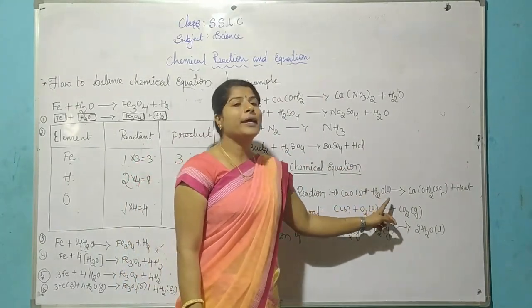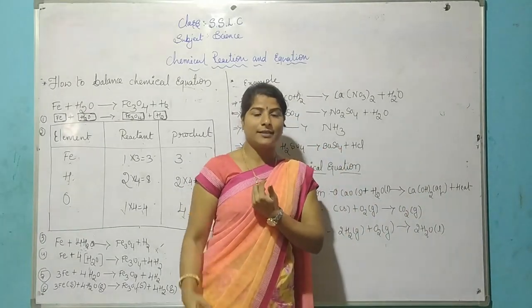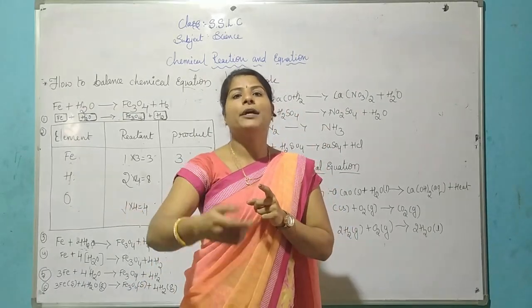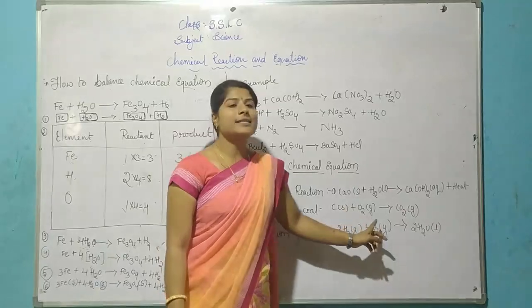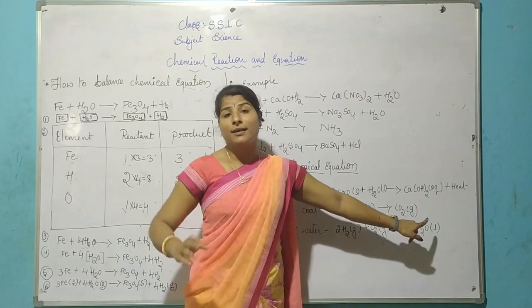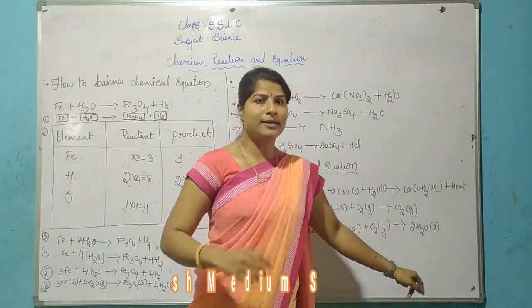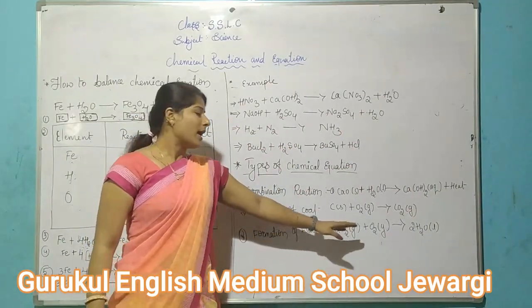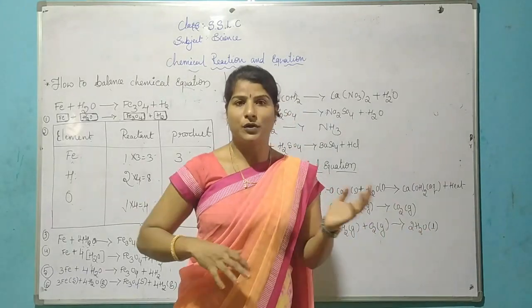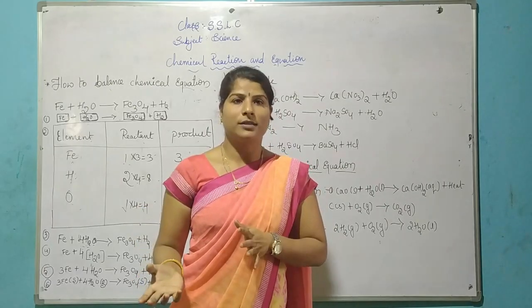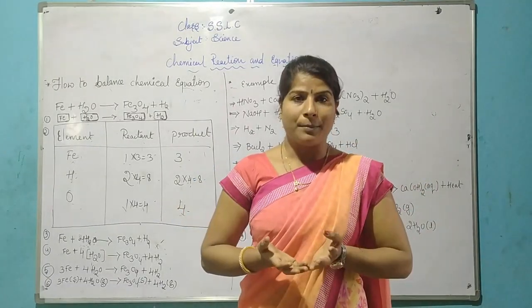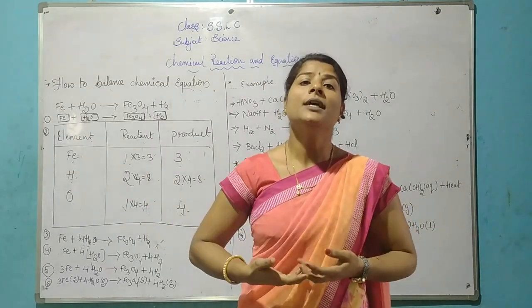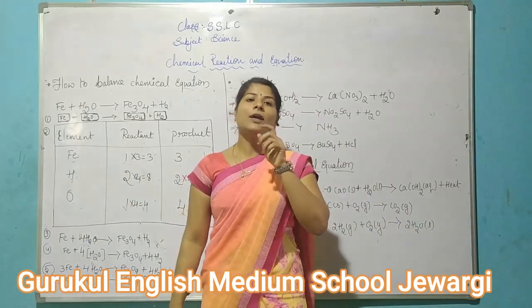Example: calcium oxide combined with water forms a single product — calcium hydroxide — and releases heat. Another example is burning of coal: carbon combines with oxygen to produce carbon dioxide. Another example is formation of water: hydrogen combined with oxygen forms water. Chemical combination is the process where two or more reactants combine to form a single product.